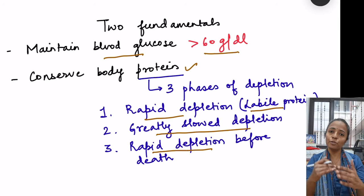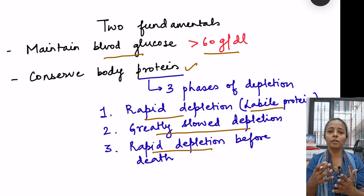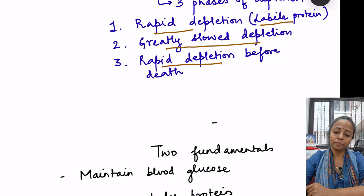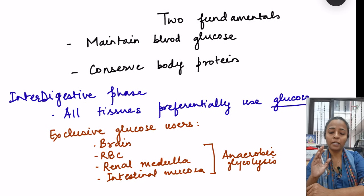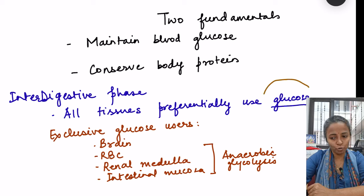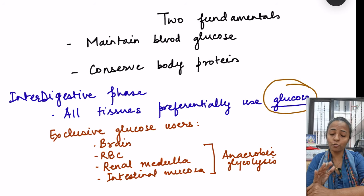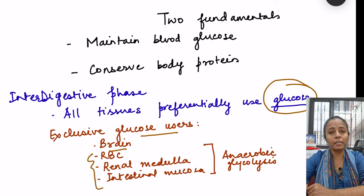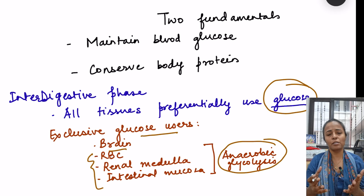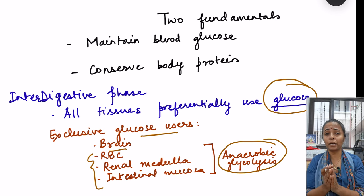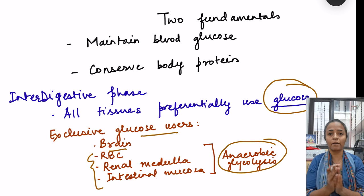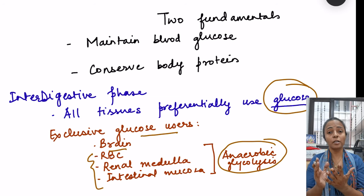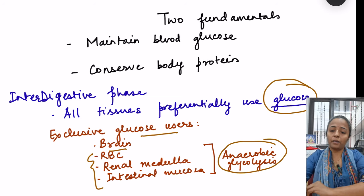Now let us go into each phase of fasting and see how the body's fuel needs are met. Remember that all tissues preferentially use glucose when it is available. Exclusive glucose users include the brain, red blood cells, renal medulla, and intestinal mucosa — in these, anaerobic glycolysis is occurring. Cells without mitochondria depend on anaerobic glycolysis, and in these cells amino acids and fats cannot be used as fuel because they are metabolized aerobically.